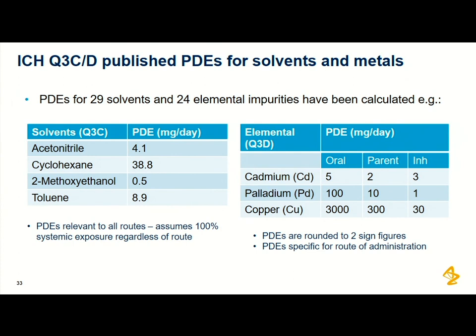There are other sources for published PDE values — 29 PDEs in ICH Q3C and 24 elemental PDEs in ICH Q3D. Really look and use these resources because it will save a lot of time and effort if a PDE is already established.